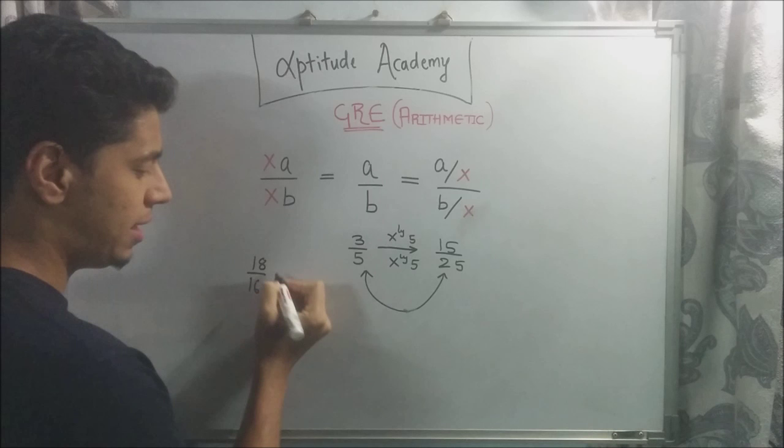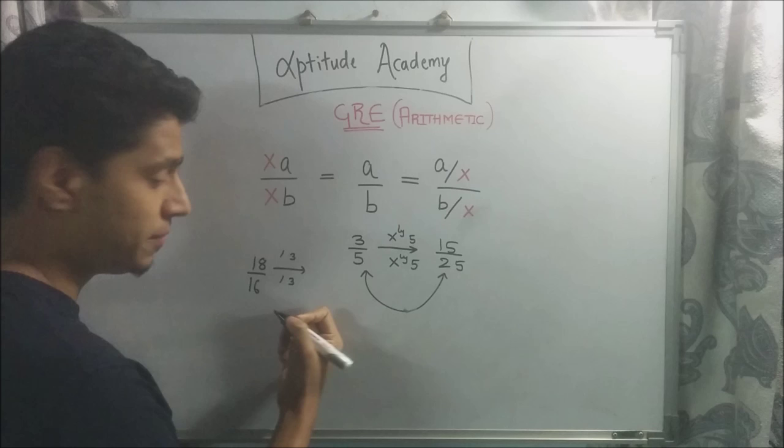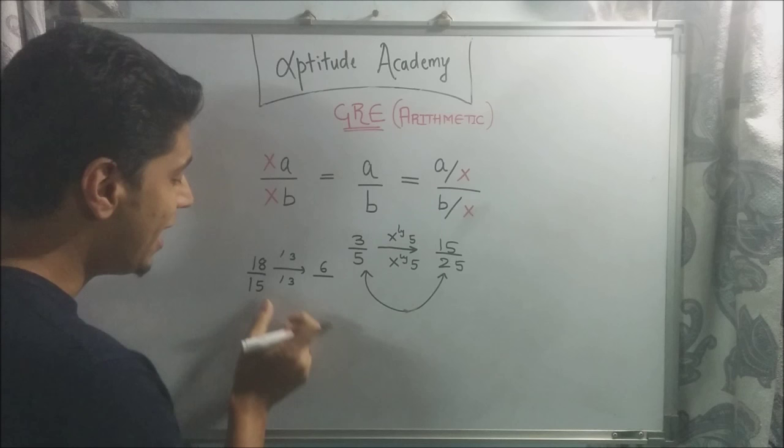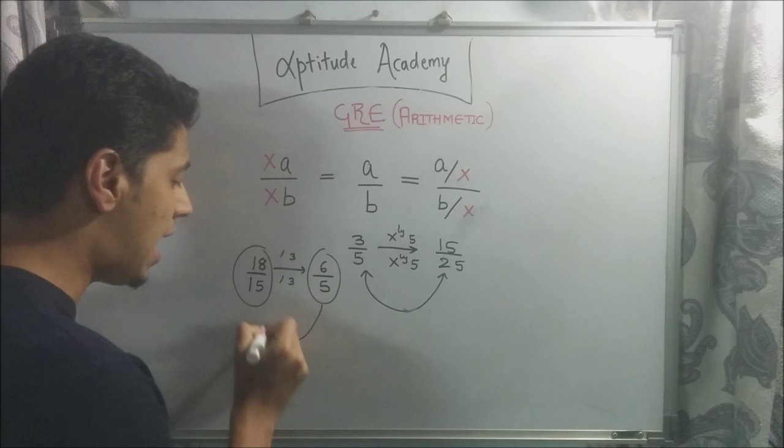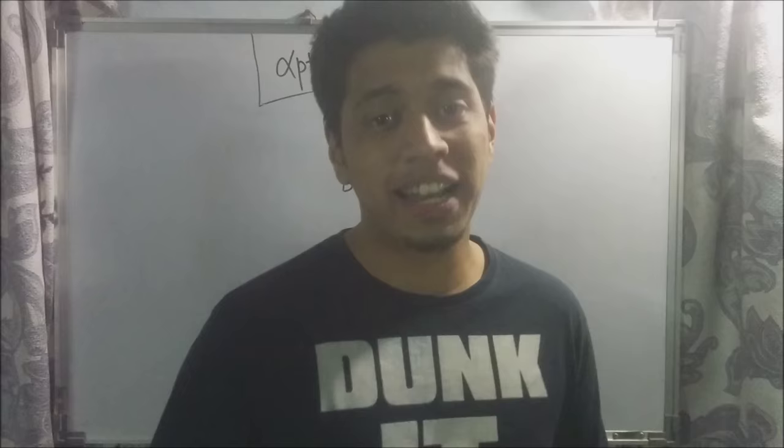Similarly, suppose I had 18 and 16. Now I'm dividing it by 3 and here also I'm dividing it by 3. Let's just take 15 to make it simple. So 15 by 3 is 5. Now 18 by 15 and 6 by 5 are exactly the same. This property is very important when you use it in simplification.